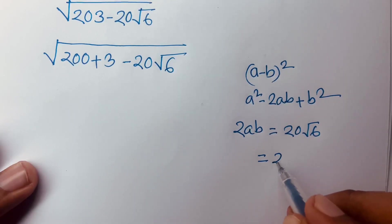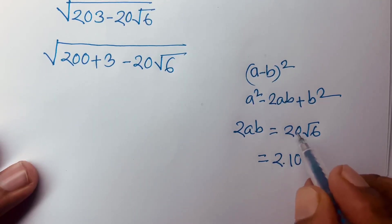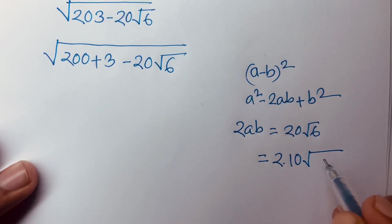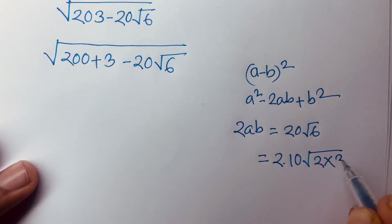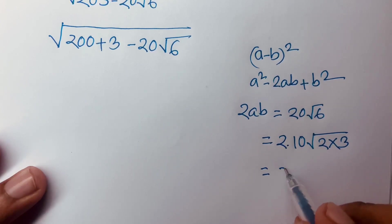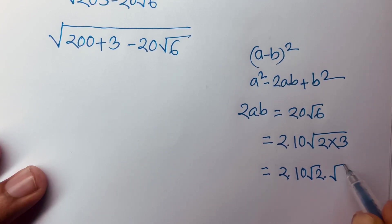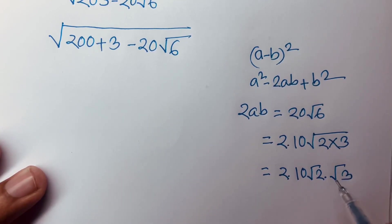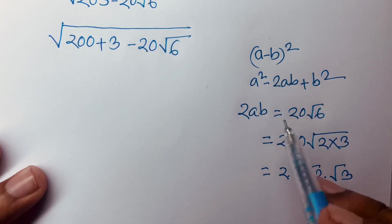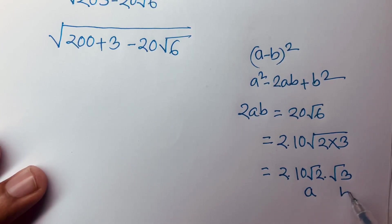So 2 times 10 equals 20, and square root 6 equals square root 2 times square root 3. Then I can write 2 times 10 square root 2 times square root 3. Comparing this, I can see a is equal to 10 square root 2 and b is equal to square root 3.